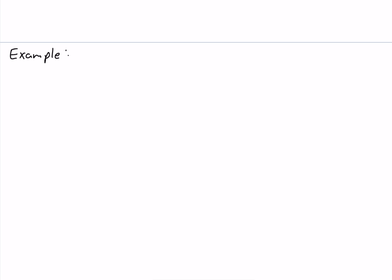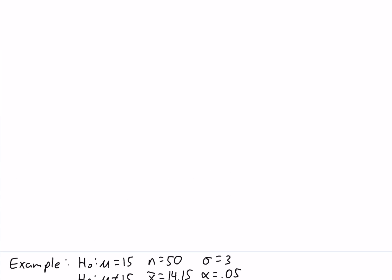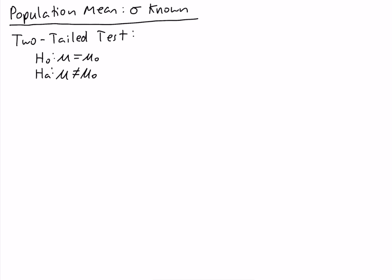In our example of a two-tailed test, mu naught is equal to 15. The sample size is 50, the sample mean is equal to 14.15, the population standard deviation is 3, and the level of significance is 0.05. The first step in any hypothesis test is to calculate the test statistic. The formula is z equals x-bar minus mu naught over sigma divided by the square root of n.